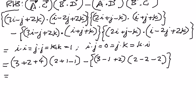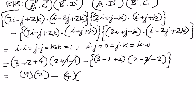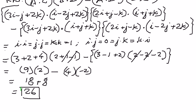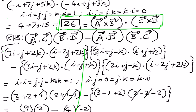Now we simplify the right-hand side expression. a·c = 3 + 2 + 4 = 9; 9 times 2 (since b·d: positive 1 and negative 1 cancel, giving 2). Minus: a·d = 3 − 1 + 2 = 4; times b·c where positive 2 and negative 2 cancel leaving negative 2. Therefore: 9 times 2 is 18, minus 4 times negative 2 is positive 8, and 18 plus 8 equals 26. The right-hand side equals 26, which is exactly what we got for the left-hand side.